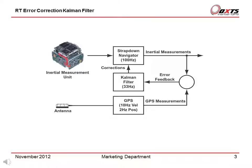Now let's look at the RT error correction Kalman filter. The Kalman filter does not filter the data — instead it filters the errors. The outputs are directly from the inertial sensors after the corrections have been done. The role of the Kalman filter is to make the difference between the GPS and the inertial measurements as small as possible. To do this, it takes an error signal and uses it to figure out what parameters in the strapped-down navigator are incorrect.